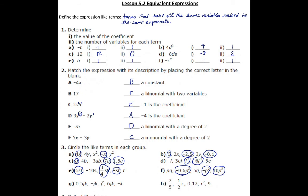Down to part G: we have 0.5JK, and I can see there are other terms that have J and K in it, so I'm going to include those — the negative JK, for instance. Not the J squared, because we've got J but we're missing the K, and the J is squared there. We're also going to include 6JK, and of course not the negative K because it doesn't have a J in it.